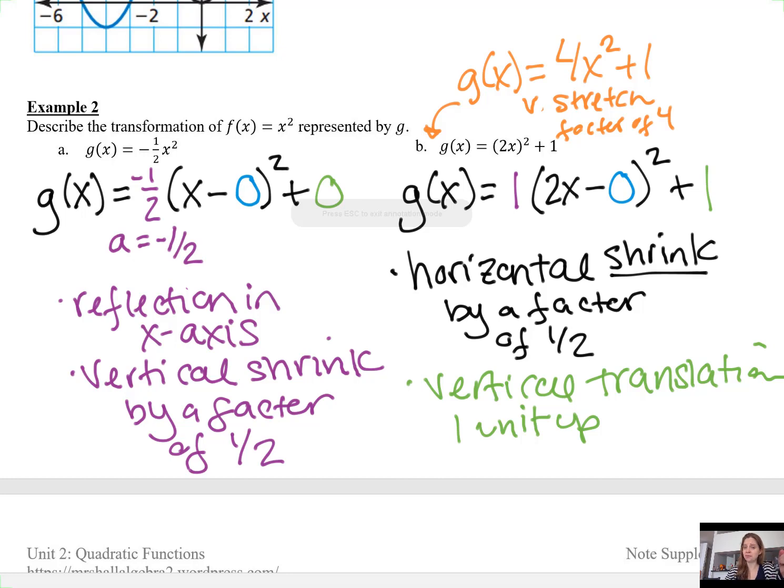If you simplified it first to the orange function I've written, you could instead say this was a vertical stretch by a factor of 4 and a vertical translation 1 unit up. So you have the option of pairing these two transformations or this one and this one. Either is correct.